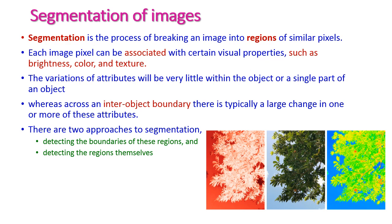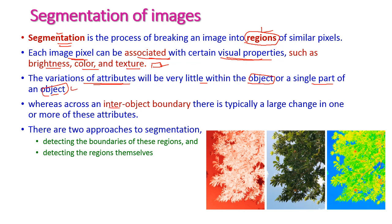Segmentation is breaking the image into regions of smaller pictures. Each image pixel can be associated with certain visual properties — brightness, color, and texture — and the image is segmented accordingly. The variation of attributes will be very little within an object or single part of an object, but at inter-object boundaries the variation will be very large, so we can easily identify the objects in the images.